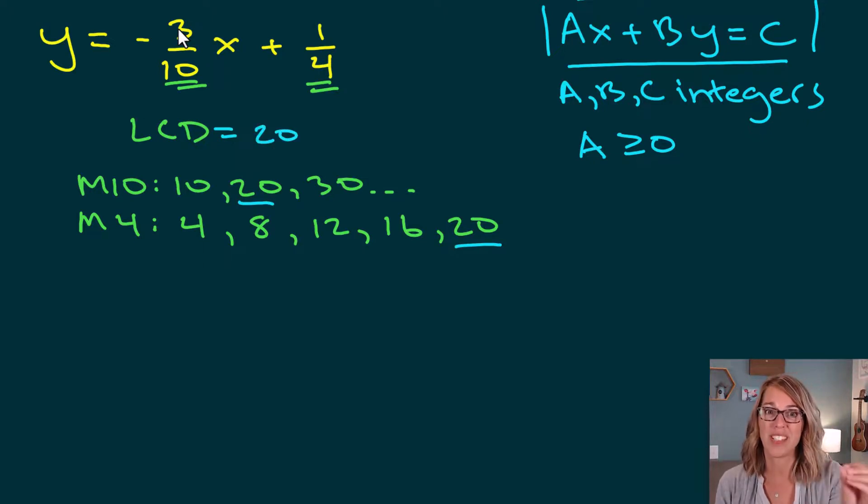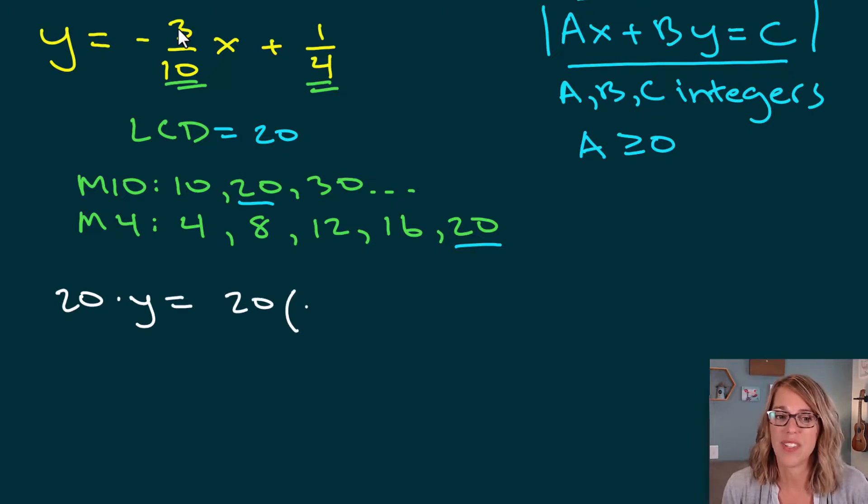Now I'm going to multiply both sides of my equation by 20. So I'm going to multiply 20 times that y. So 20 times y is equal to 20 times everything on the other side. So the negative 3 tenths x times 20, plus I'm going to multiply that 1 fourth also by 20.